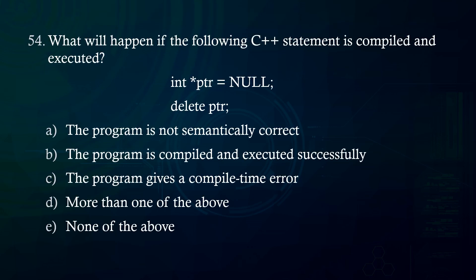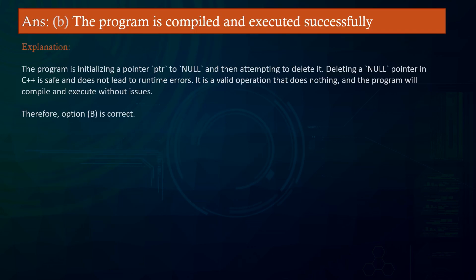What will happen if the following C statement is compiled and executed: PTR = null; delete PTR? A. The program is not semantically correct B. The program is compiled and executed successfully C. The program gives a compile time error D. More than one of the above E. None of the above. Answer: The program is compiled and executed successfully. Explanation: The program initializes a pointer PTR to null and then attempts to delete it. Deleting a null pointer in C++ is safe and does not lead to runtime errors. It is a valid operation that does nothing, and the program will compile and execute without issues. Therefore, option B is correct.